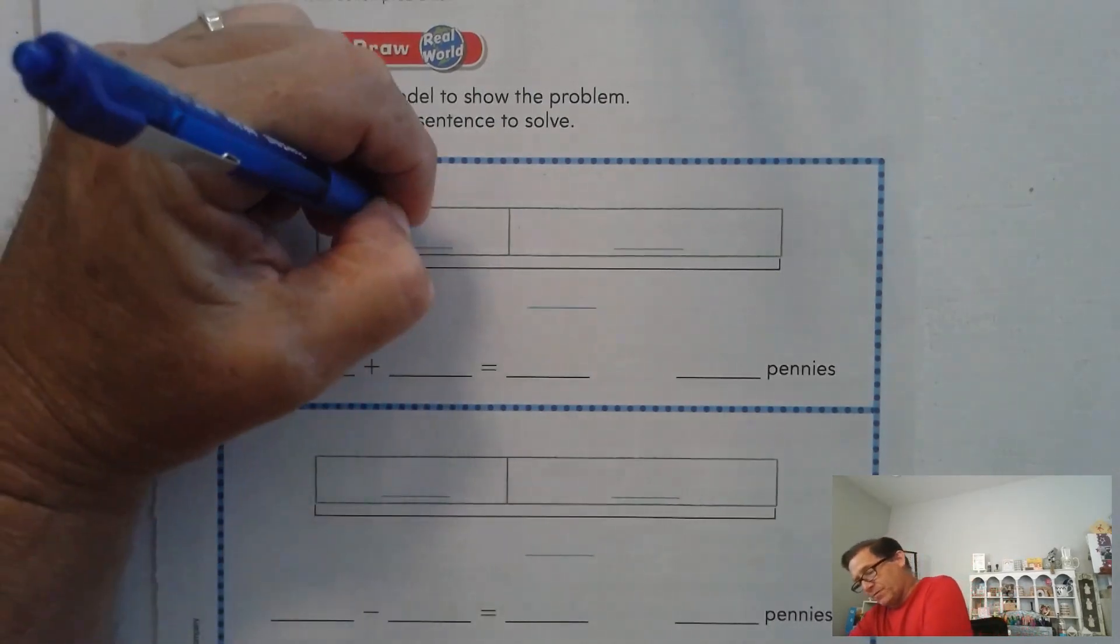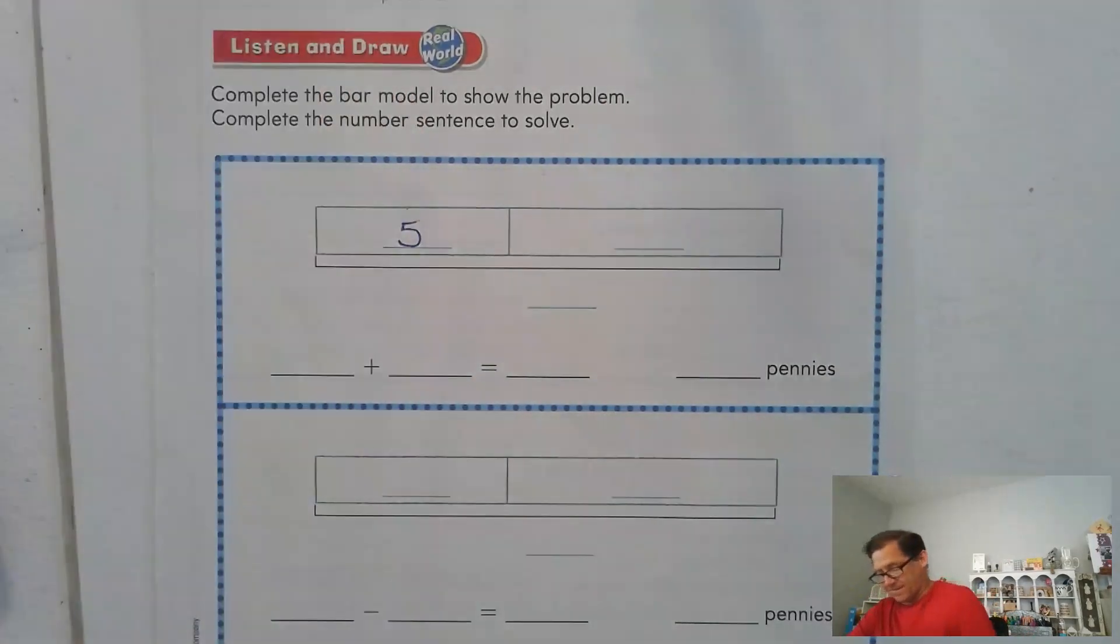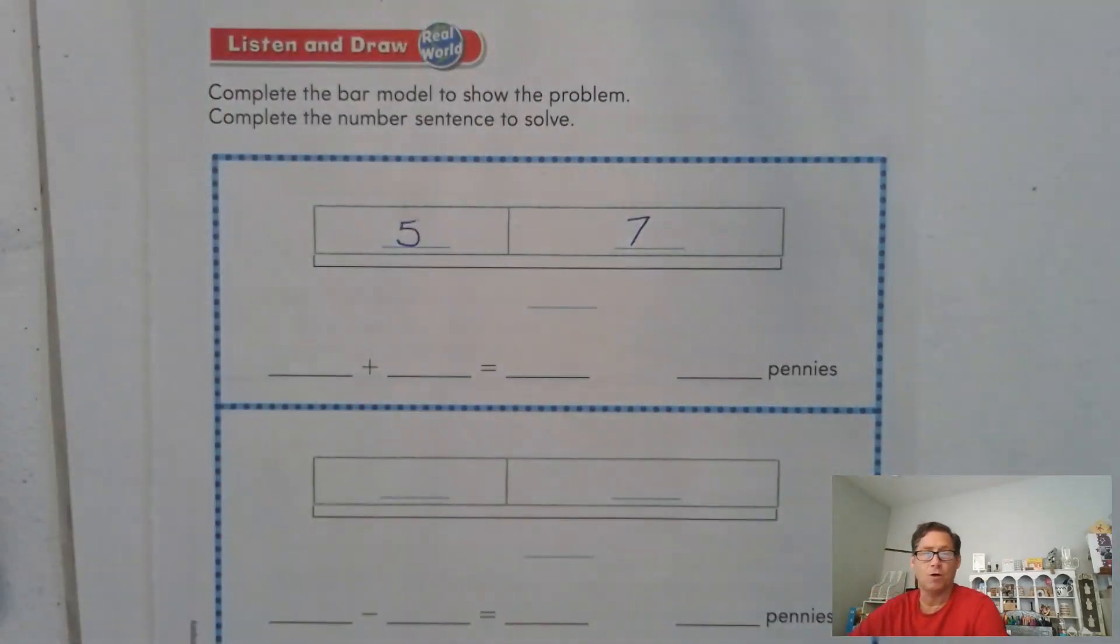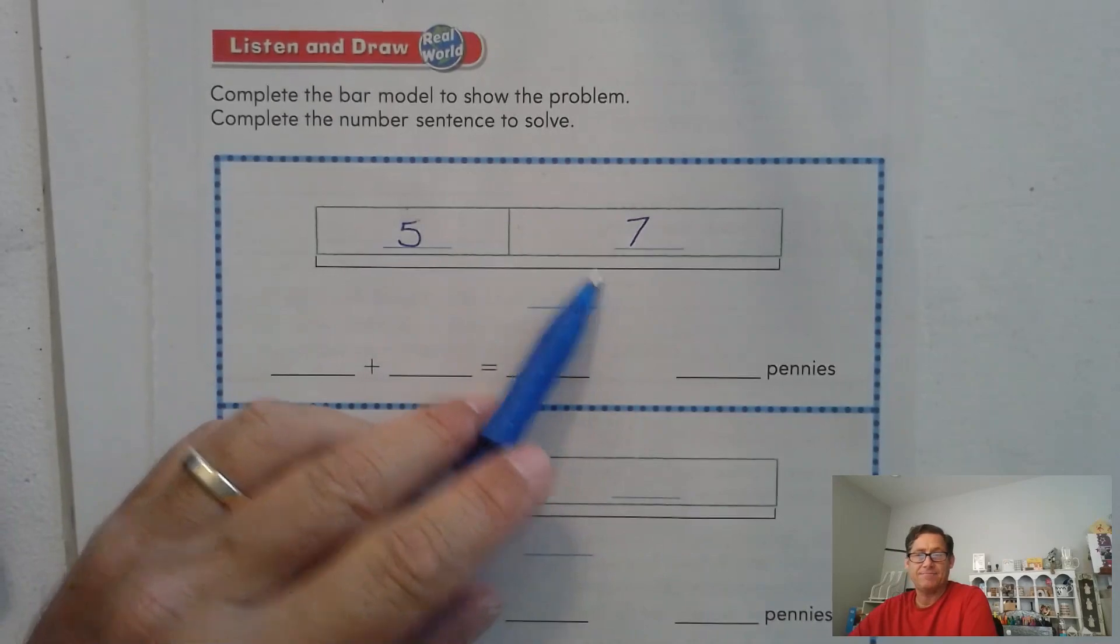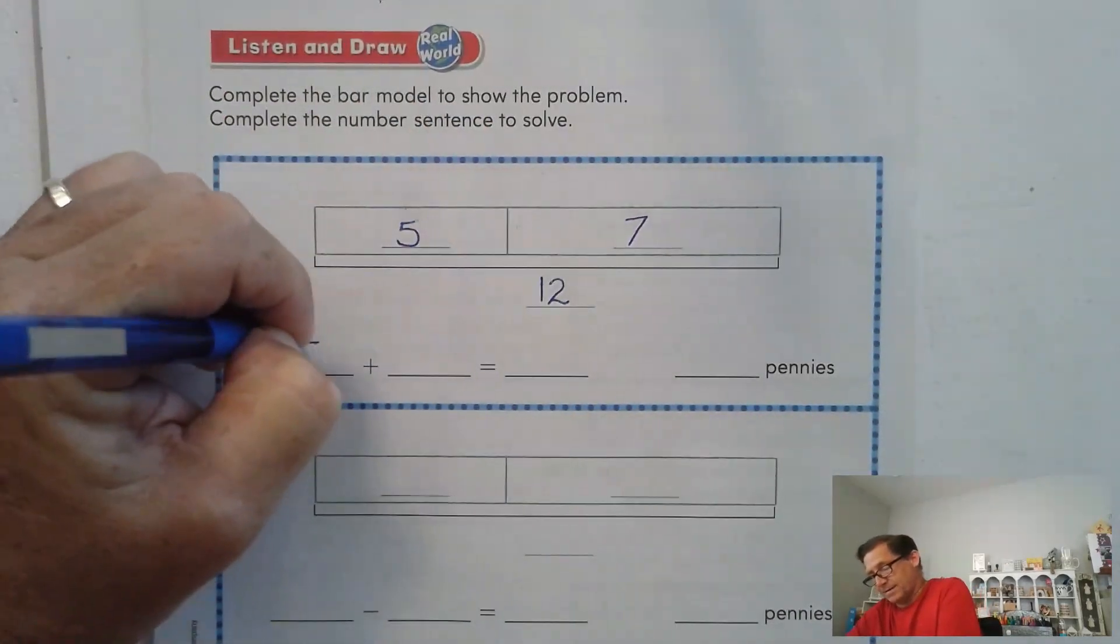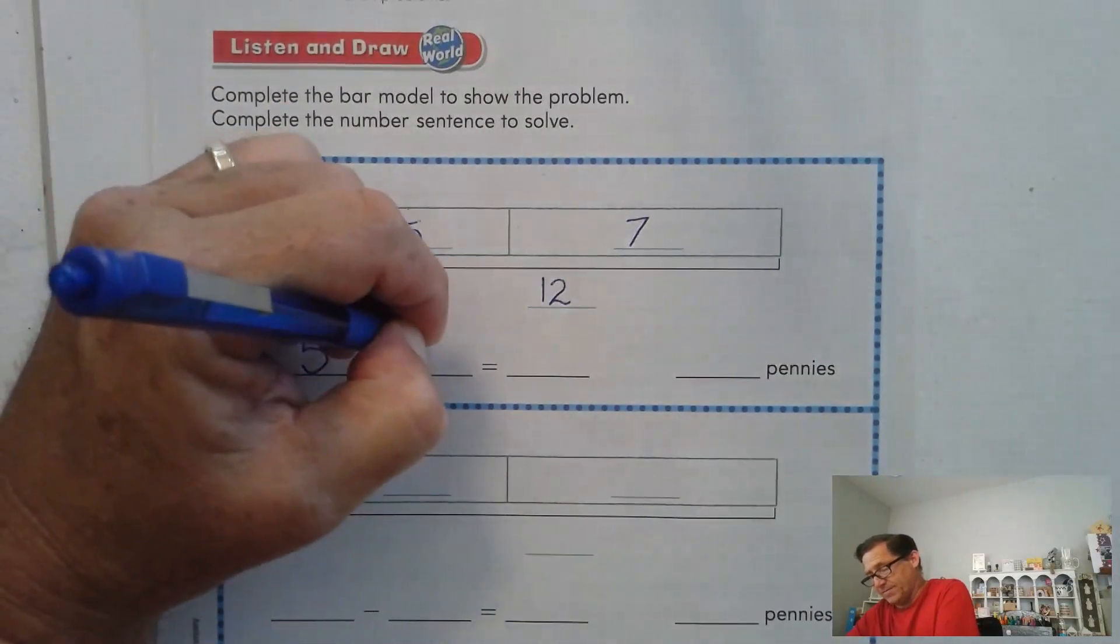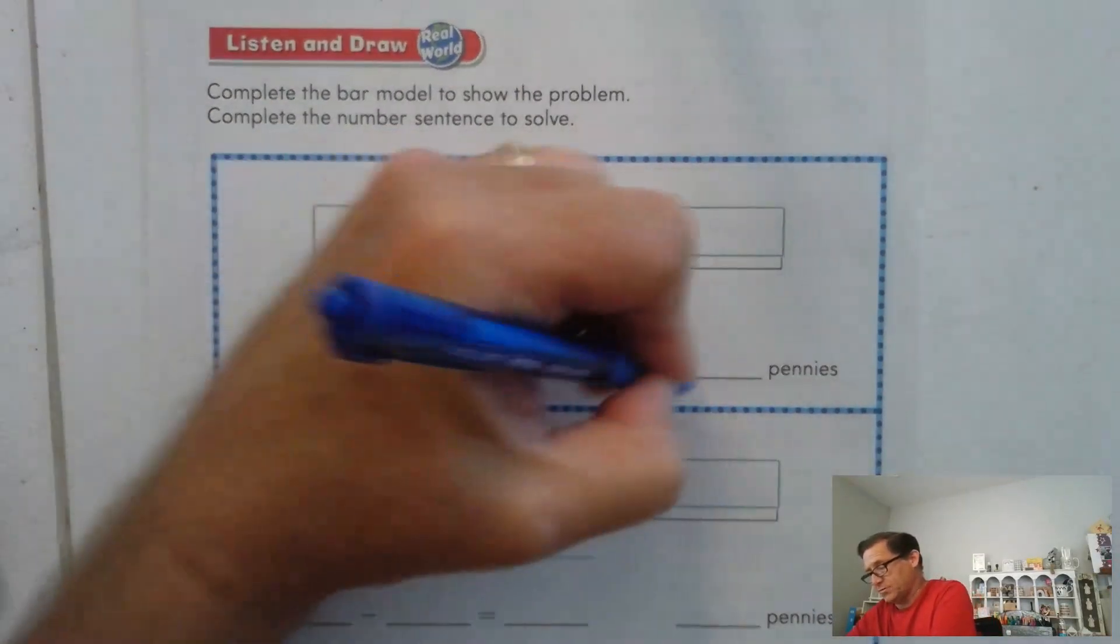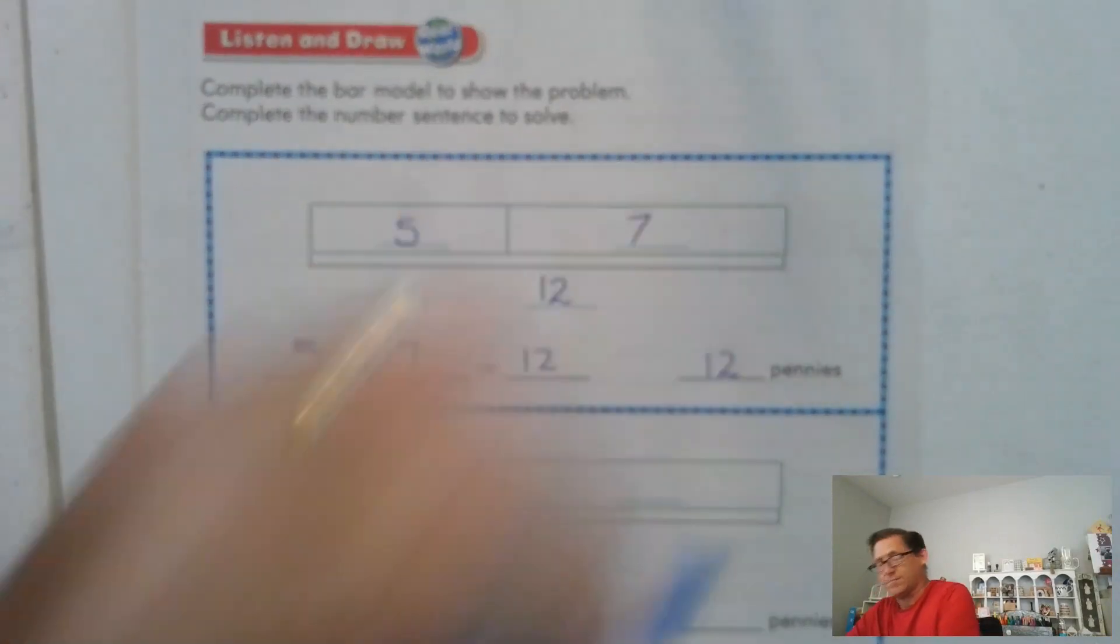All right, is this what you came up with? Five pennies in her pocket, seven pennies in her wallet. How many total does she have? Well, five and five is ten, plus two more is twelve. As an addition sentence, it would be five and seven more, which would be twelve. Twelve pennies.